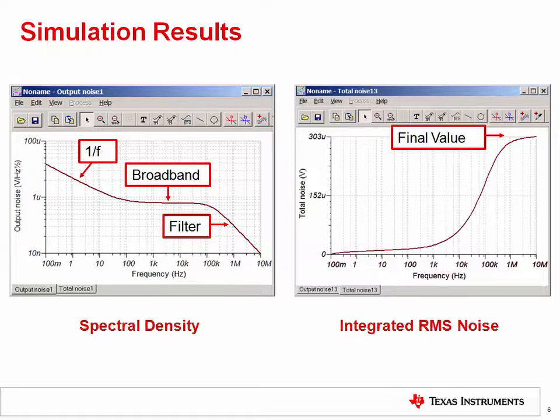So how does the simulation result compare with the hand calculations from Noise Video 3? The total noise from the hand calculation was 324 microvolts RMS. And the simulation result is 303 microvolts RMS. This is actually very good agreement. In general, you should get good agreement between calculation and simulation. However, there may be some differences from secondary effects in the model. If the difference between the model and the hand calculation is greater than 20%, you should double-check the simulation model and your hand calculations to try to find a discrepancy.